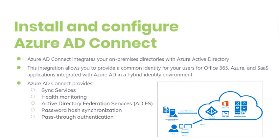Azure AD Connect will integrate your on-premise directory with Azure Active Directory, allowing you to provide a common identity for your users. For Office 365, Azure, and SaaS applications integrated with Azure AD in a hybrid identity environment, Microsoft Azure Active Directory Connect can be downloaded for free. Integrating your on-premise directory with Azure AD makes your users more productive by providing a common identity for accessing both cloud and on-premise resources.